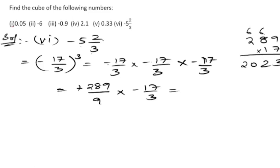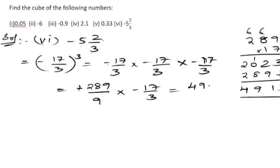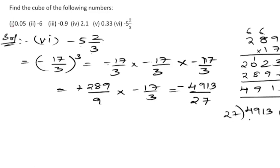Multiplying 289 by 1 gives 289. Completing the multiplication: 289 into 17 — nine plus two is 11, eight plus one is 9, four — so 4913. The denominator: 3 cubed is 27. The sign is minus into minus into minus, which is negative. So we have minus 4913 upon 27. Now dividing: 27 ones are 27, two left, bring down — 221.